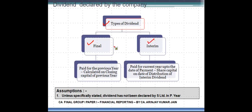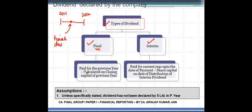Let's say for example we are dealing with a case of 2011-12, and you are given in the question that a final dividend was declared by the subsidiary. The assumption is that this final dividend is paid for the previous year — the year preceding 2011-12, which is 2010-11. Therefore, it is normally calculated on the closing share capital of the last year, which is as of 31-3-2011.